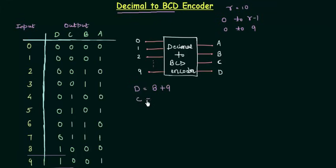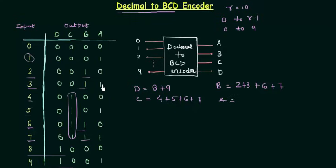Similarly if I see for what values C is high then I will find 4, 5, 6, 7. For these four values C is high. So 4 or 5 or 6 or 7. Similarly we will find for B it is 2 or 3 or 6 or 7. And for A it is high for 1, 3, 5, 7, 9, for all the odd values: 1 or 3 or 5 or 7 or 9. So this is what we have to find from this truth table.